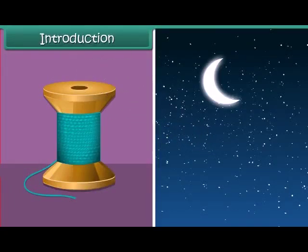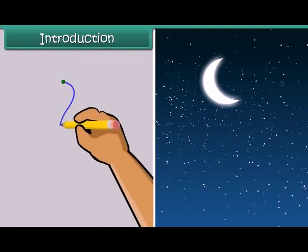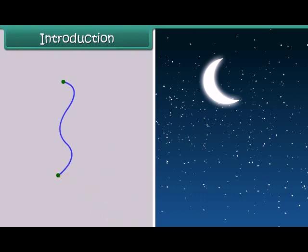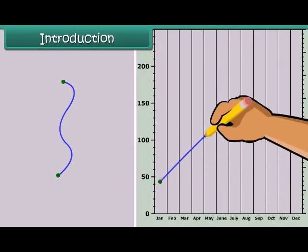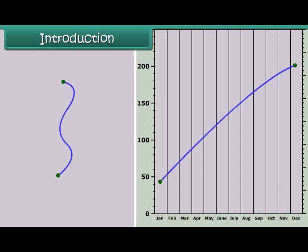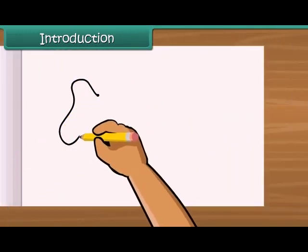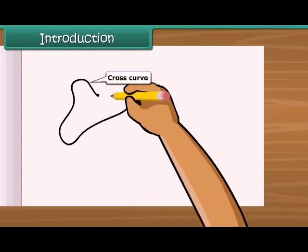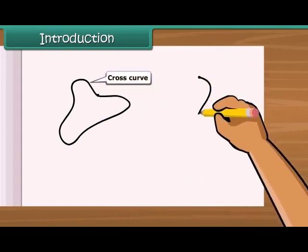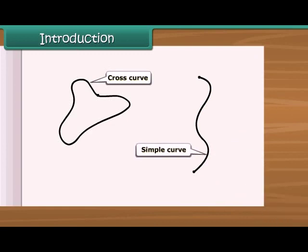What shape does a loose thread make? What shape is a crescent moon? A curve in everyday usage means not straight. In mathematics, a curve can be straight also. A curve can cross itself or may not cross itself. If a curve does not cross itself, then it is called a simple curve.